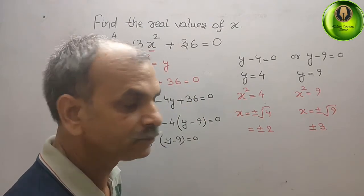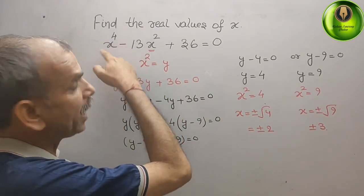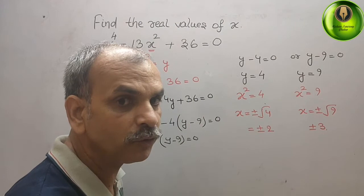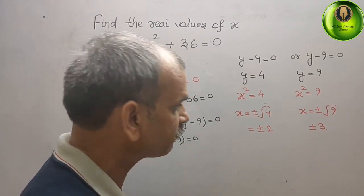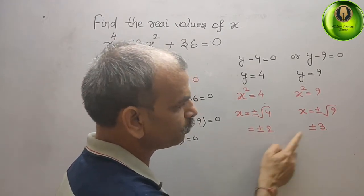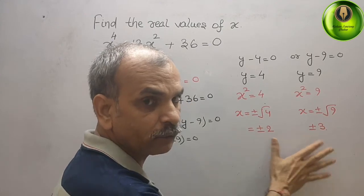You should understand that the power is 4, that means you will get 4 roots. That's why we got plus and minus 2, plus and minus 3. Total is 4.